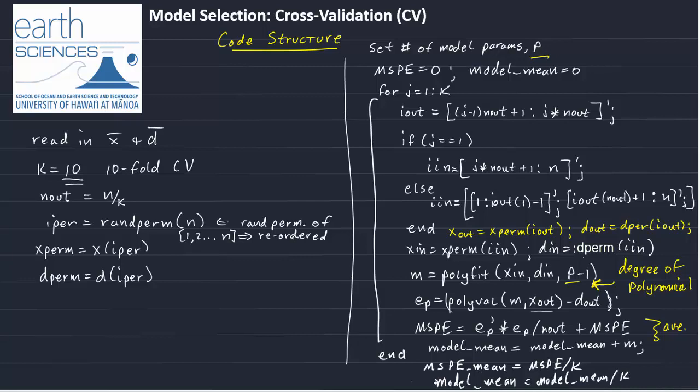is equal to model mean divided by k. Sorry my handwriting's degrading because my computer's not writing very well at the bottom of my screen. This says model mean and that's equal to model mean divided by k so here we're taking the average of these.